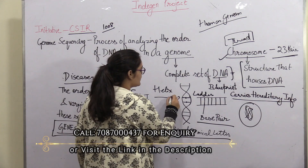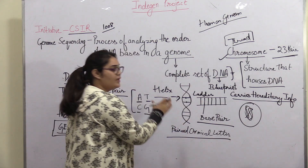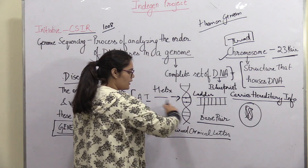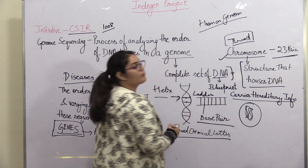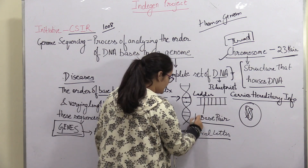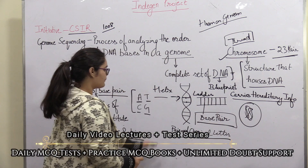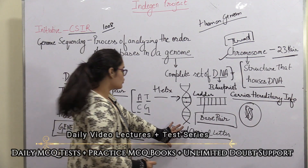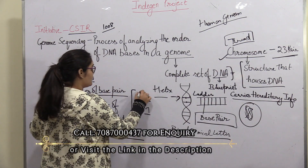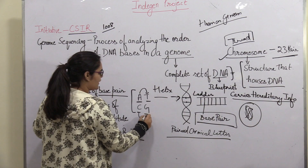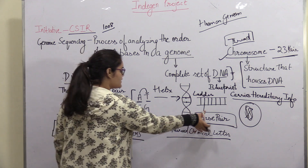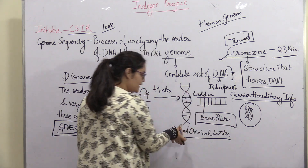DNA is in a helix form. To understand the DNA structure, if we straighten up this helix, it will be in a ladder form. The lines that you see in the ladder are your base pairs — these are paired chemical letters. There are four of them: A, T, C, and G. Now, A only pairs with T, and C only pairs with G. These base pairs are the main part of DNA.